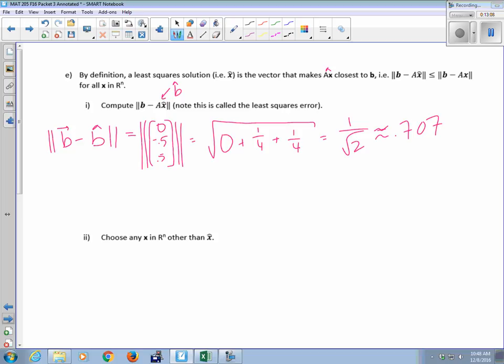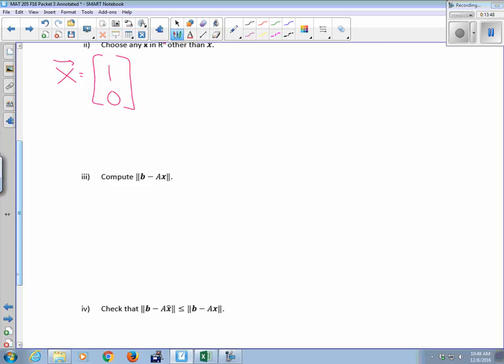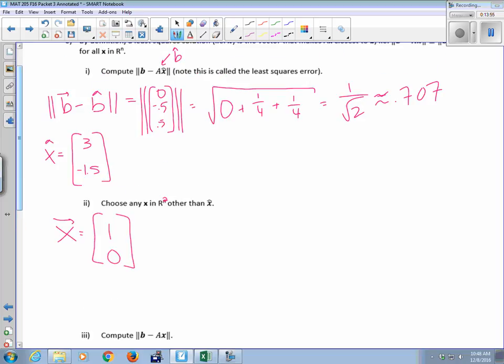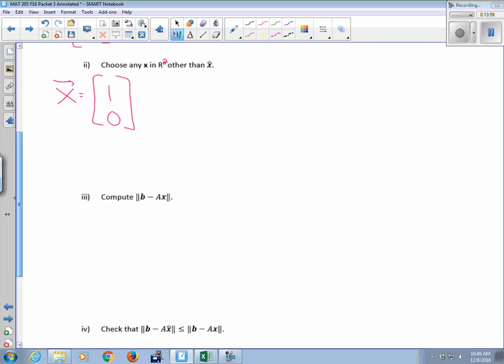All right. Somebody give me any other X in R2. 1, 0. Okay. So I want to calculate my error using 1, 0 instead of, in this case, I used X hat. Which was 3, negative 1 and a half. Thank you. Okay. So now I'm going to use a different X. Some X other than X hat. Pick a random one. And I want to compute B minus AX. And it should be a larger distance than 0.707. No matter which one we picked.